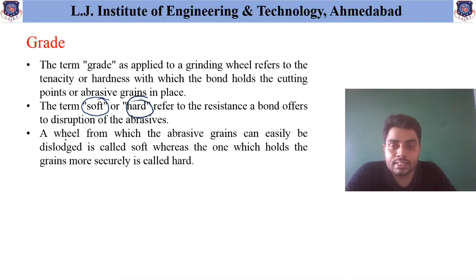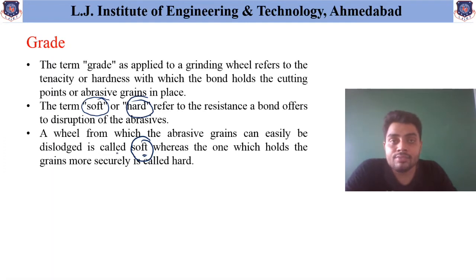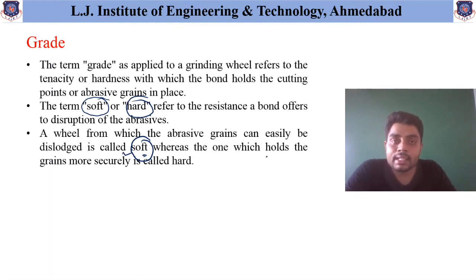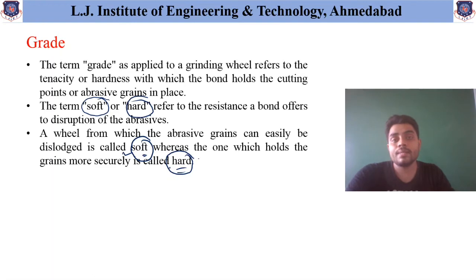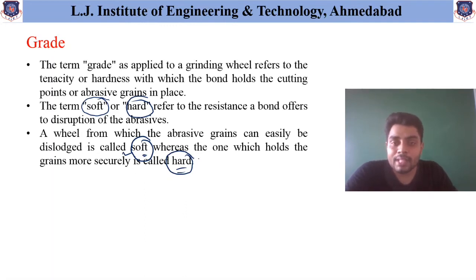A wheel from which abrasive grains can easily be dislodged is called soft grade. If the grains added to the wheel are fixed very tightly or attached securely, they are called hard grade. Based on the attachment of abrasive particles with the grinding wheel, we can determine if it is a soft or hard grade wheel. The choice of hard or soft grade depends on the material to be finished.